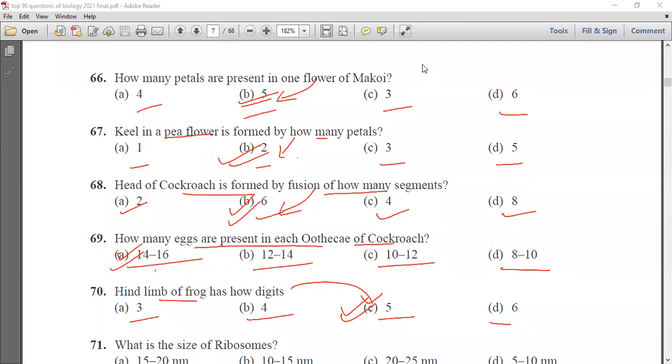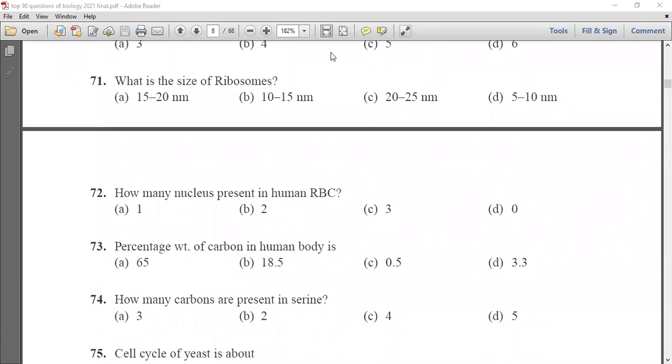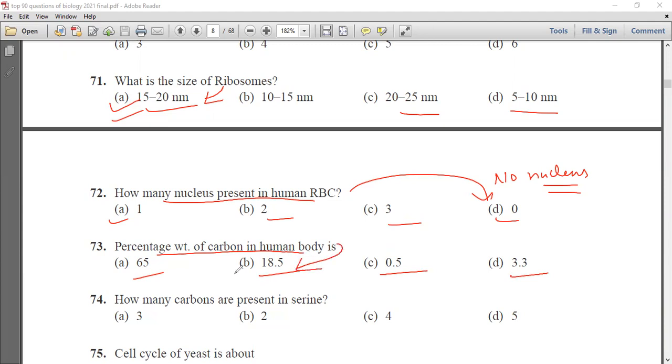What is the size of ribosome? 15 to 20 nanometer, 10 to 15, 20 to 25, or 5 to 10 nanometer. Size of ribosome is 15 to 20 nanometer. How many nucleus are present in human RBC? 1, 2, 3 or 0. Human RBC has zero nucleus, no nucleus is present. Percentage weight of carbon in human body is 65, 18.5, 0.5 or 3.5. Percentage of carbon in human body is 18.5. How many carbons are present in serine? 3, 2, 4 or 5. 3 carbons are present.